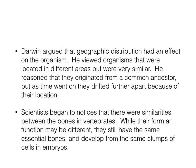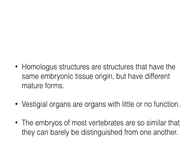Scientists began to notice that there were similarities between the bones in vertebrates. While their form and function may be different, they still have the same essential bones and develop from the same clumps of cells in the embryos. Homologous structures are structures that have the same embryonic tissue origin but have different mature forms. Vestigial organs are organs with little or no function, and the embryos of most vertebrates are so similar that they can barely be distinguished from one another.